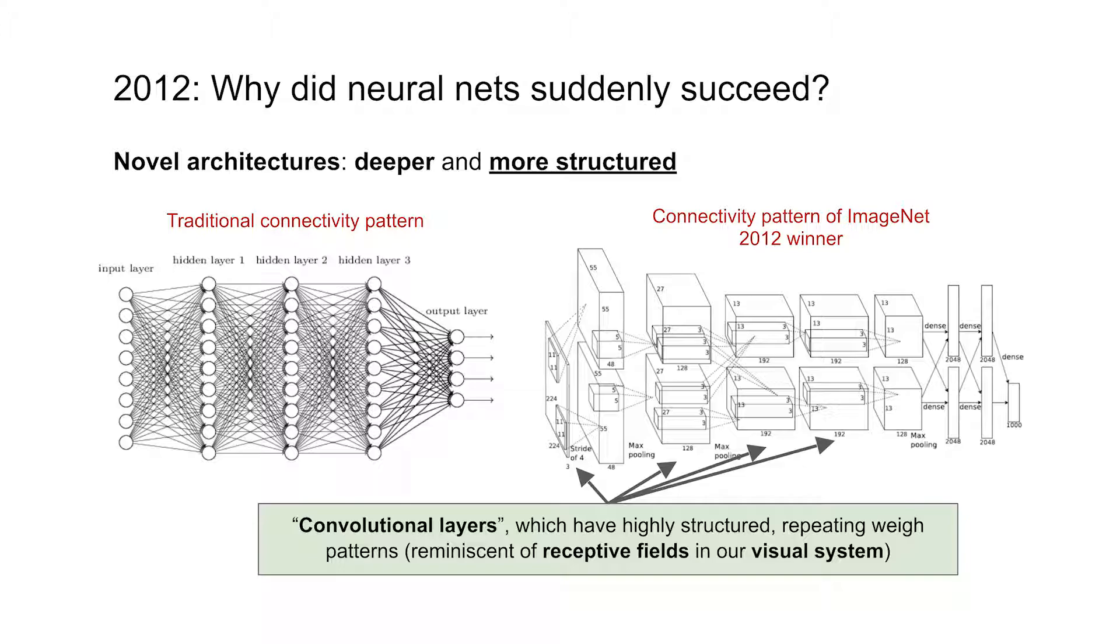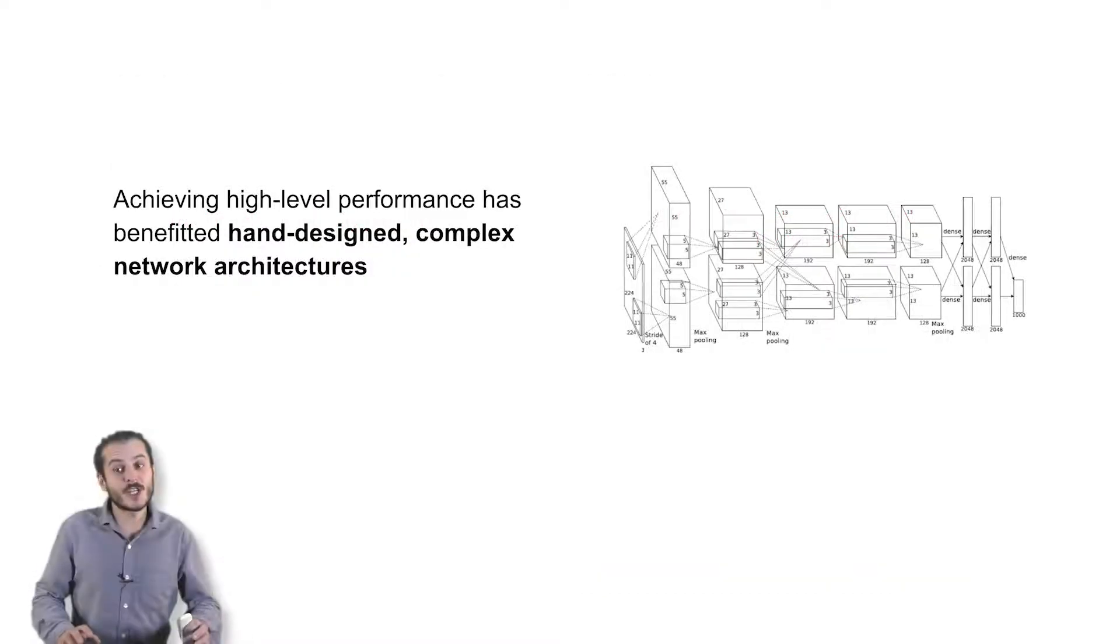So we see that unlike more traditional neural networks, deep nets are often very structured. They don't just have everything connected to everything else as was assumed to be acceptable before. As I mentioned, designing such architectures requires quite a bit of domain knowledge. It's actually more of an art than a science. People don't really understand how it works, but it seems to make a big difference on the performance of the neural networks.